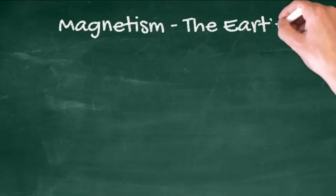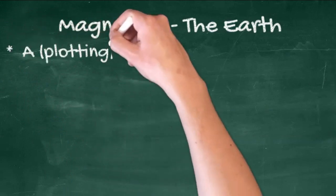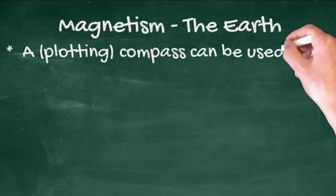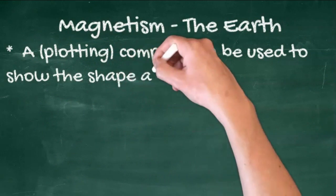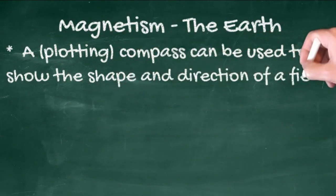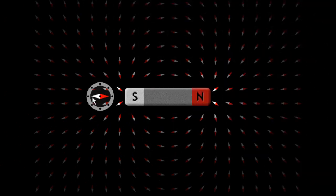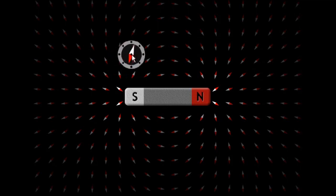The earth too has a magnetic field and a compass can be used to show the direction of the field lines associated with the earth. This animation shows a plotting compass being used to follow the field lines as they go, in this case, from south to north.